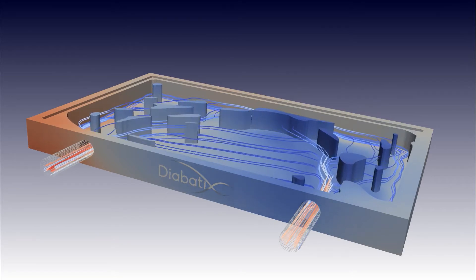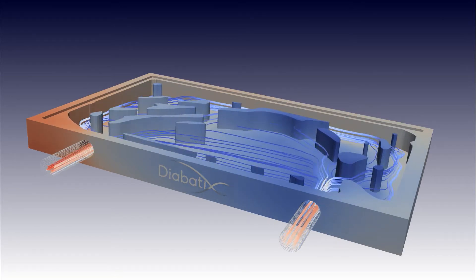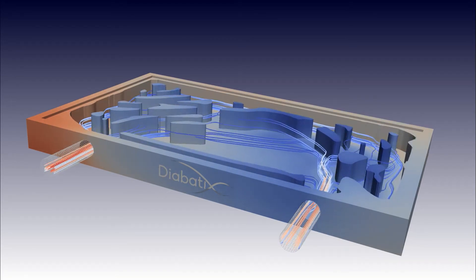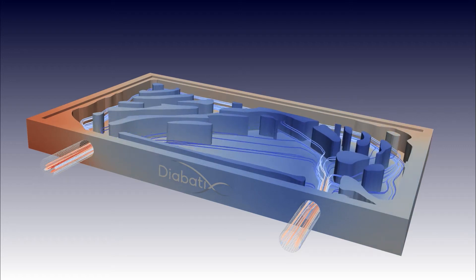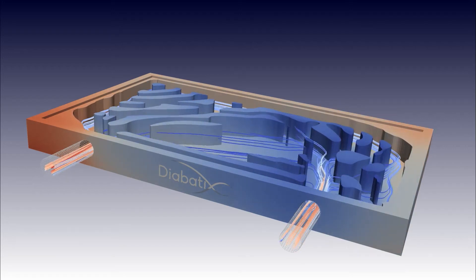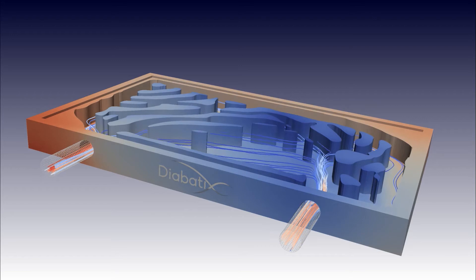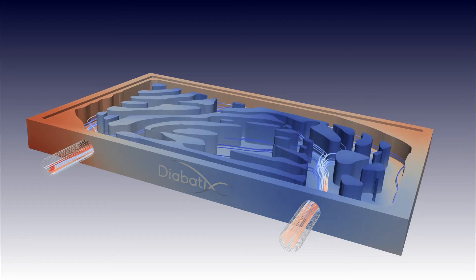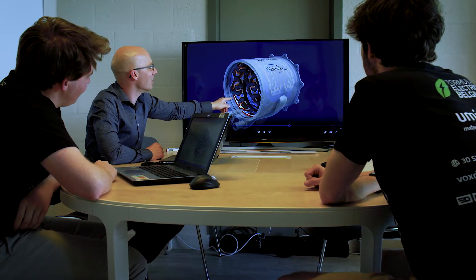Our software is specifically designed so that it is not constrained. As an engineer, you learn how to solve a certain problem in a fixed way. Our software doesn't have those limitations, so it will look for the most optimal cooling system, whether there are symmetries or not. This leads to complex networks of cooling channels that are very performant — that's why you see the colors that you see.